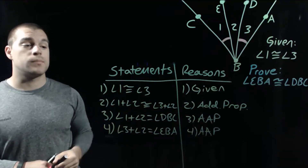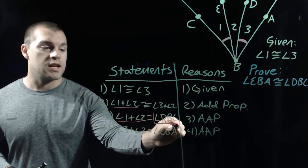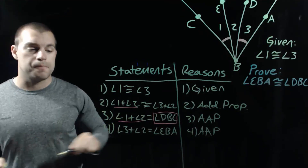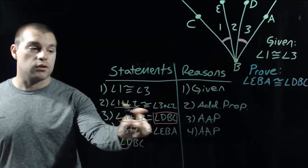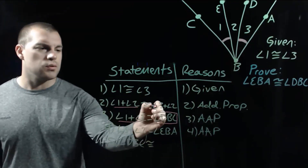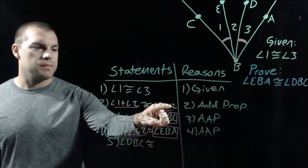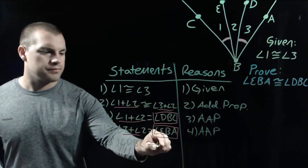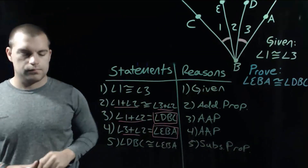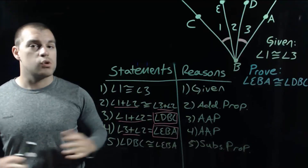Now in our last step, we're going to be doing some substitution. Earlier we had angle 1 plus angle 2, and we just said that angle 1 plus angle 2 is the same as angle DBC, so we're going to replace that using the substitution property. We can also replace angle 3 plus angle 2 with angle EBA, and both of those use our substitution property. And then we're done — we wanted to prove that angle EBA was congruent to angle DBC, and that's what our last statement says.